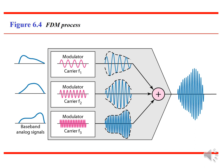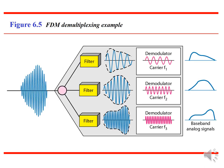In the given diagram, each source generates a signal of similar frequency range. Inside the multiplexer, these signals modulate different carrier frequencies like F1, F2, and F3. The resulting modulated signals are combined into a single composite signal sent out over a media link with enough bandwidth. At the receiver end, we can demultiplex the signal. The demultiplexer uses a series of filters to decompose the multiplexed signal into its constituent component signals, which are then passed to a demodulator that separates them from their carriers and passes them to the output lines.